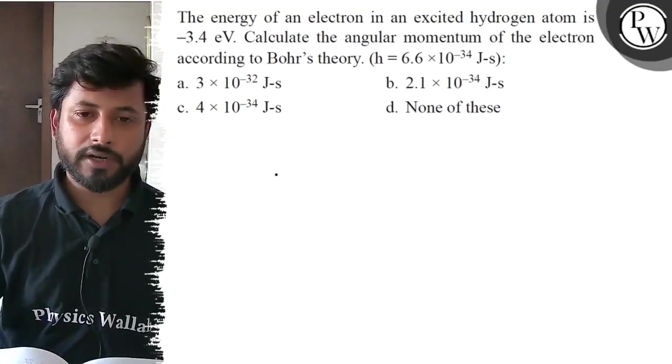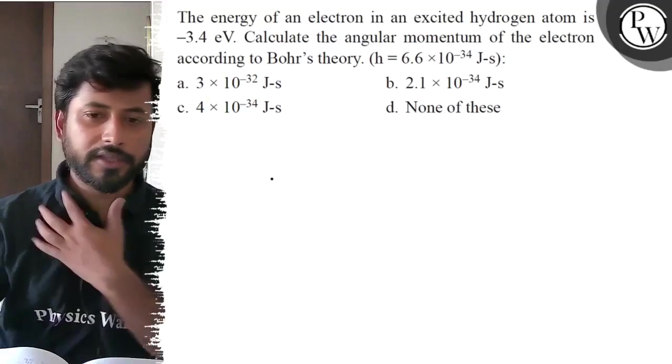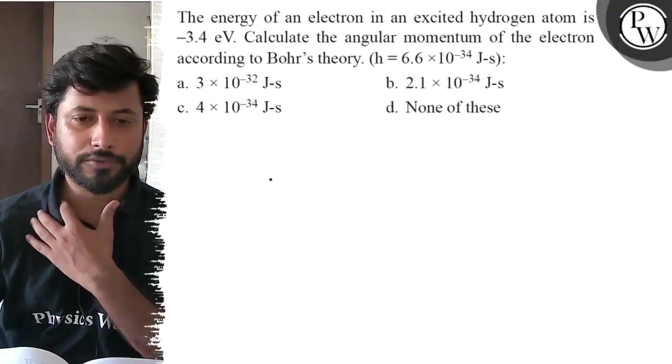Let us see this question. The energy of an electron in an excited hydrogen atom is minus 3.4 electron volts. Calculate the angular momentum of the electron according to Bohr's theory.